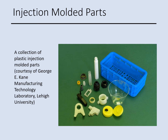Some of the parts made by injection molding are shown in this picture. Some are very tiny and some can be large — all of them can be made in one cavity since these are single parts. The mold can also be designed so that multiple parts can be produced at one time.